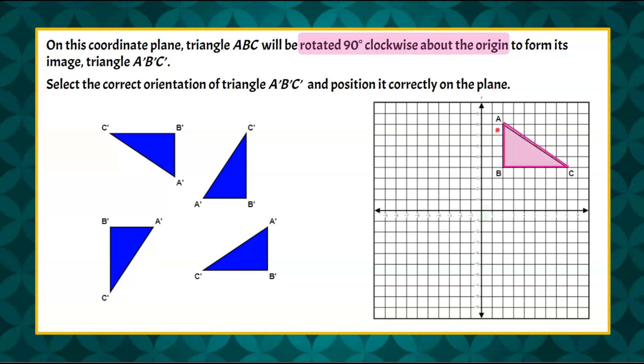First we're going to identify we have triangle ABC. Here's our origin and we're going to do one turn. So 90 degrees clockwise is going to be to the right and it's going to go from the first quadrant to the fourth quadrant in the coordinate plane.